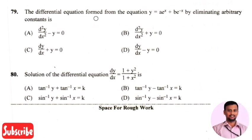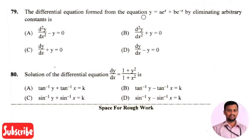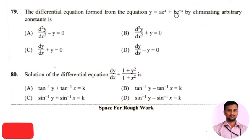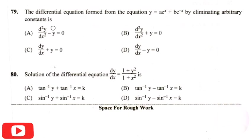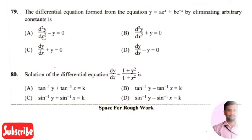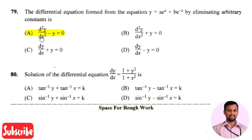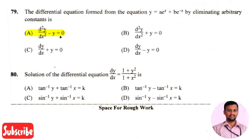The next question: the differential equation formed from the equation y equals a times e raised to x plus b times e raised to minus x, by eliminating the arbitrary constants, is? The right answer is option 1, that is d²y/dx² minus y equals 0.